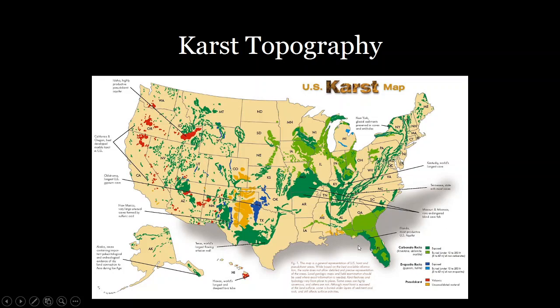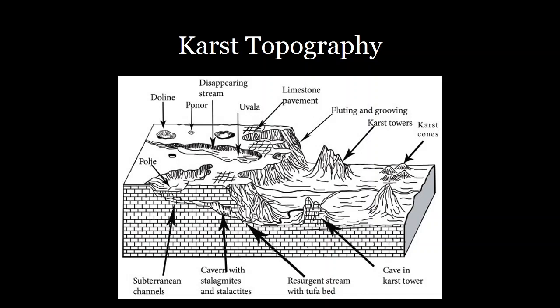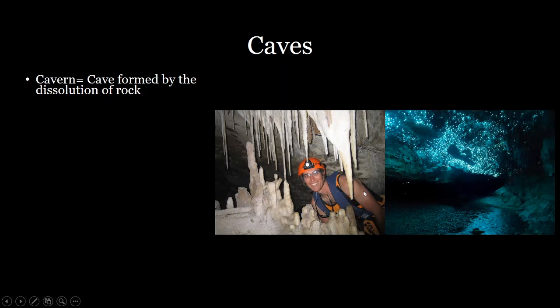If we zoom into the United States, we can see that all of Florida pretty much, as well as southern Georgia, is covered in carbonate rocks — some of it exposed and some buried. Additionally, a large amount of the Midwest has carbonate rocks, which has led to some of these areas having some of the largest cave systems in the United States. As a carbonate layer is exposed to rain and dissolves away, it can form a number of different landscape features from towers to less mature features such as dolines and uvalas.